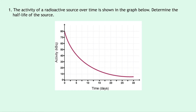We'll start by looking at two examples for the graphical method. Question 1 says that the activity of a radioactive source over time is shown in the graph below. Determine the half-life of the source. We've got activity in kBq against time in days, and our curve starts up at an activity of 80 kBq. Because the time is in days, we should expect a half-life value that is going to be in days as well.